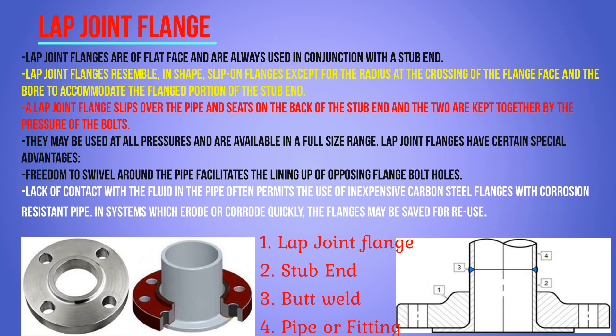Lap joint flanges are of flat face and are always used in conjunction with the stub end. Lap joint flanges resemble in shape like a slip-on flange except for the radius at the crossing of the flange face and the bore to accommodate the flange portion of the stub end. A lap joint flange slips over the pipe and seats on the back of the stub end, and the two are kept together by the pressure of the bolts. They may be used at all pressures and are available in full size range.